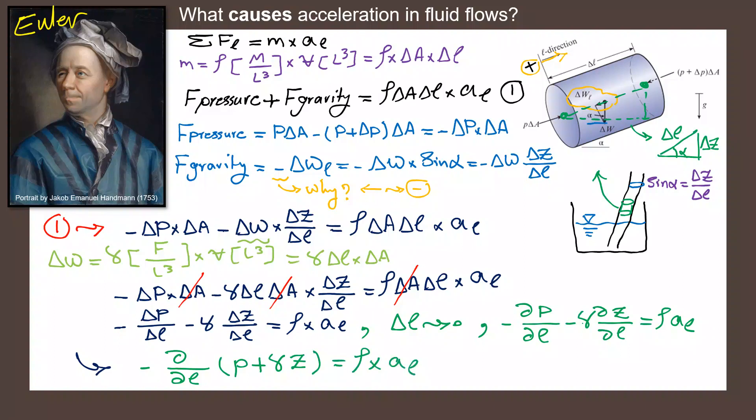All right. And this is Euler's equation. But before I end this slide, this part of it should be very familiar for you. Do you remember this part from hydrostatics? This whole part was called piezometric pressure, right? So, what this equation is telling us is that the acceleration has a direct linear relationship with the gradient of piezometric pressure. It's very interesting.